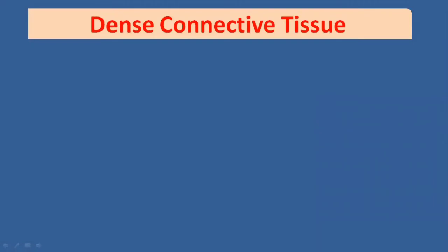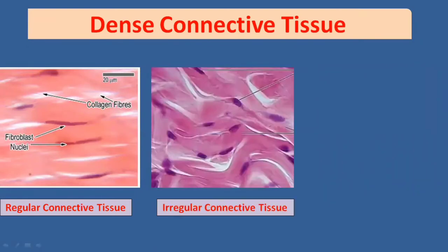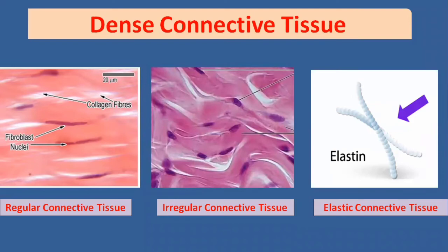Dense connective tissue is also further divided into three types: regular connective tissue, irregular connective tissue, and elastic connective tissue. Dense connective tissue mostly surrounds organs, like ligaments and tendons. Elastic connective tissue is involved in the formation of arteries because arteries must be elastic for circulation. These connective tissues provide strength, support, and elasticity to different organs of the body.